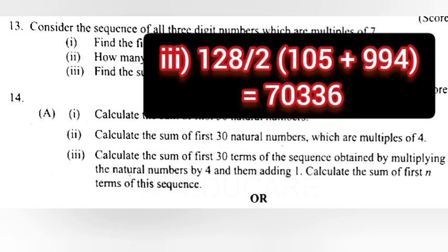3. 128 by 2 into 105 plus 994 equal 70,336.